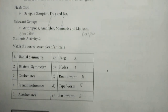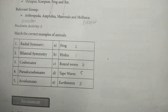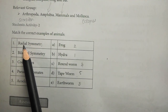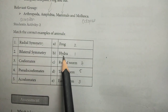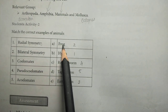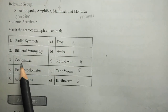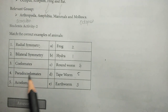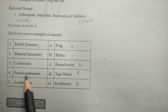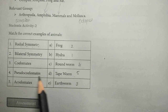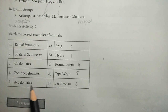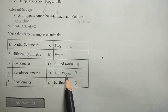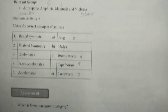Next, match the student activity tool: match the correct examples of animals — radial symmetry: Hydra; bilateral symmetry: Frog; Coelomates: Earthworm; Pseudocoelomates: Roundworm; Acoelomates: Tapeworm, Flatworm.